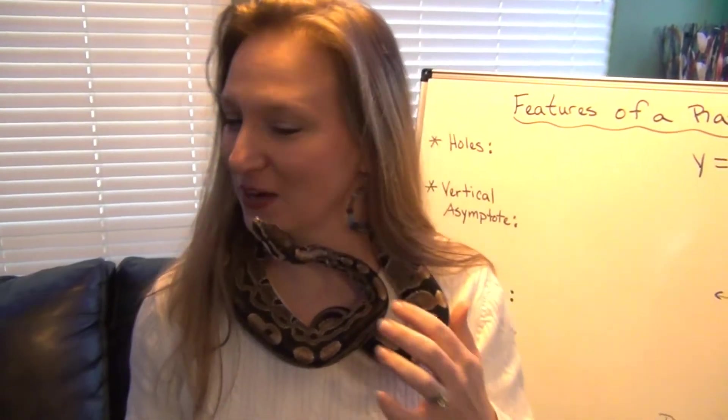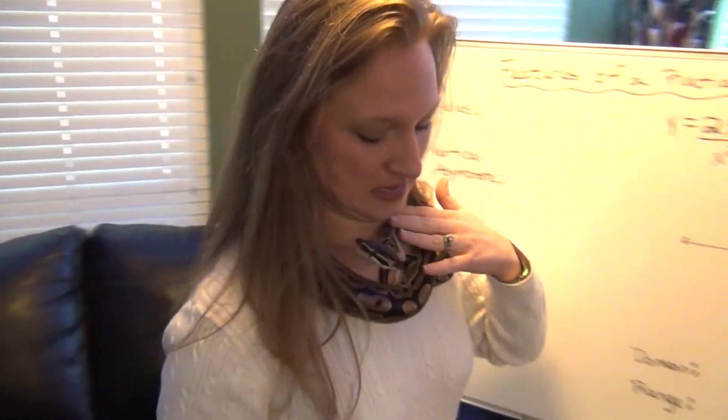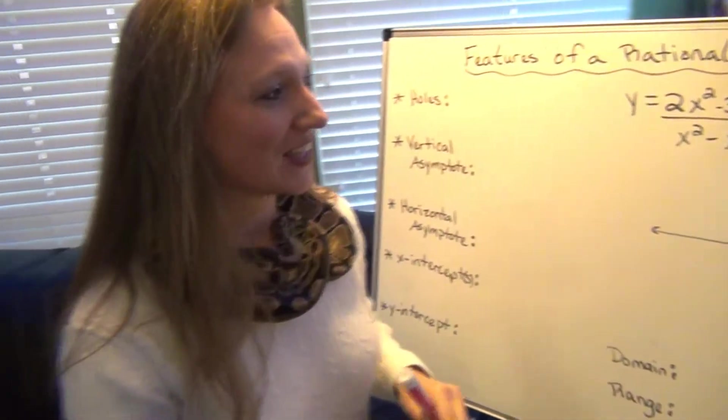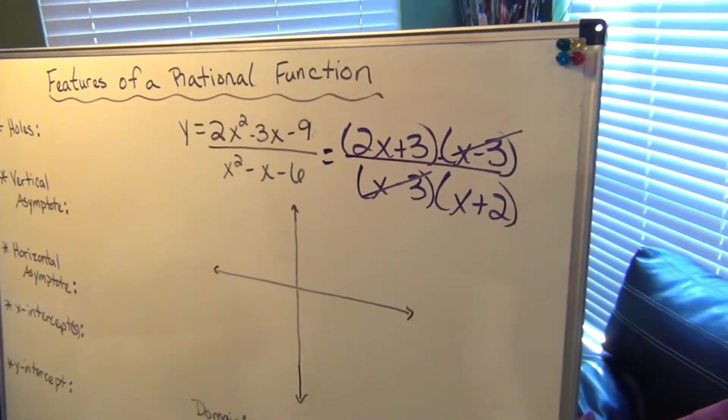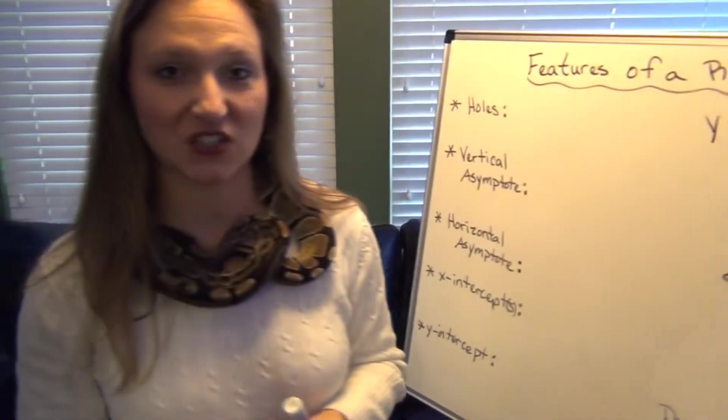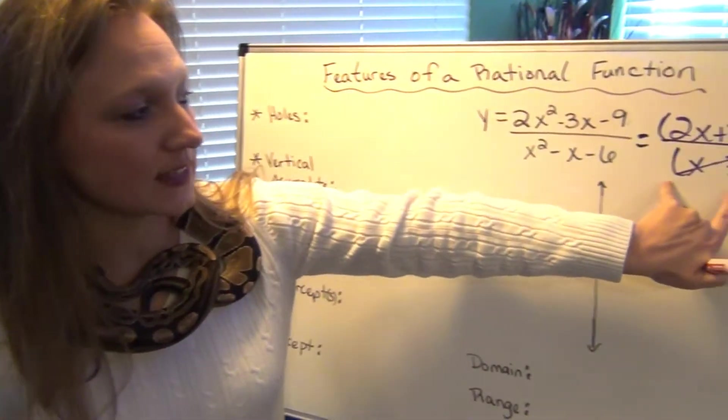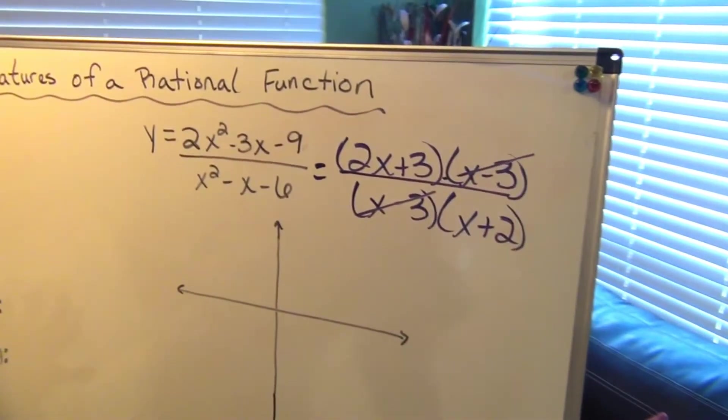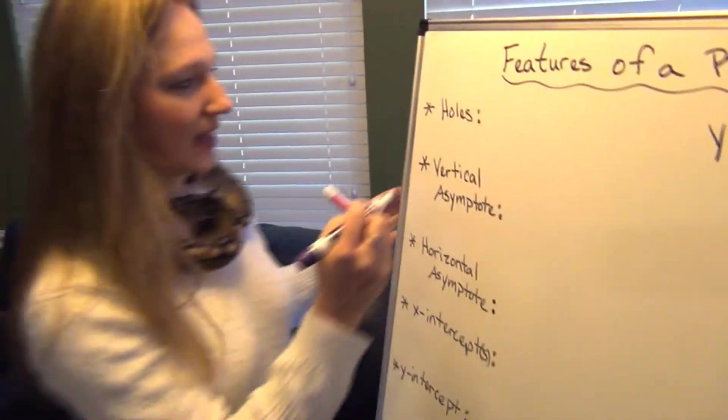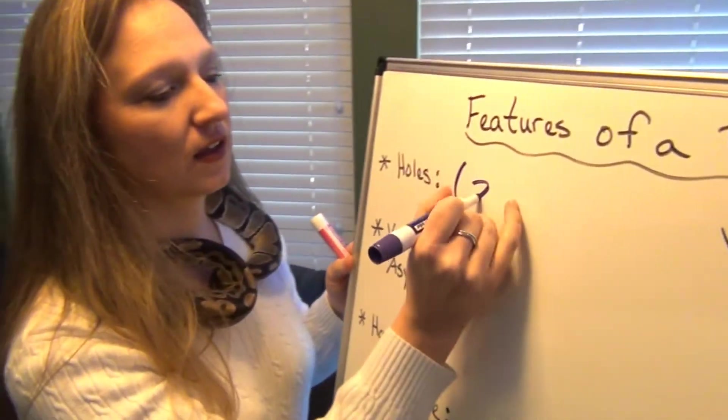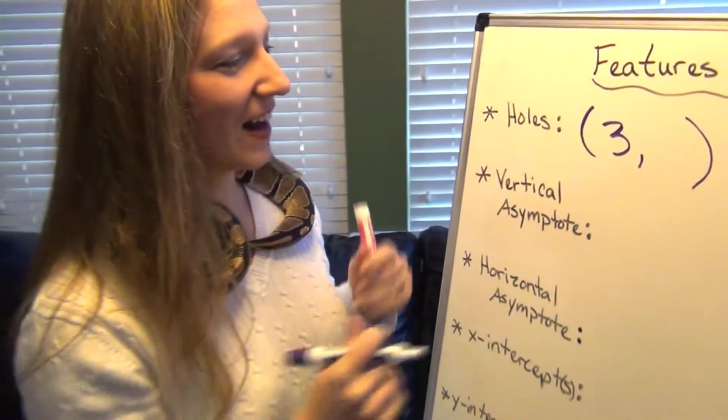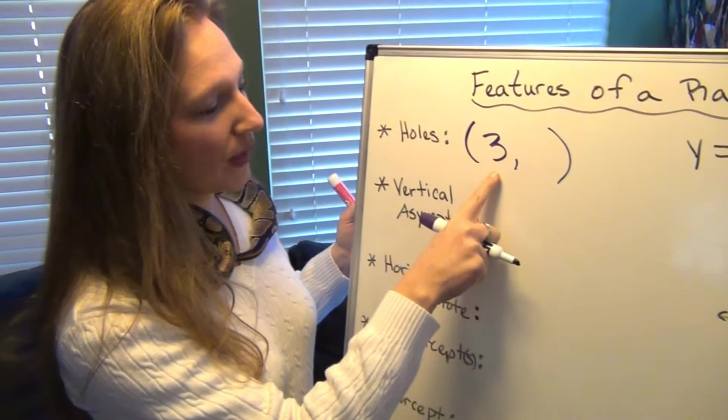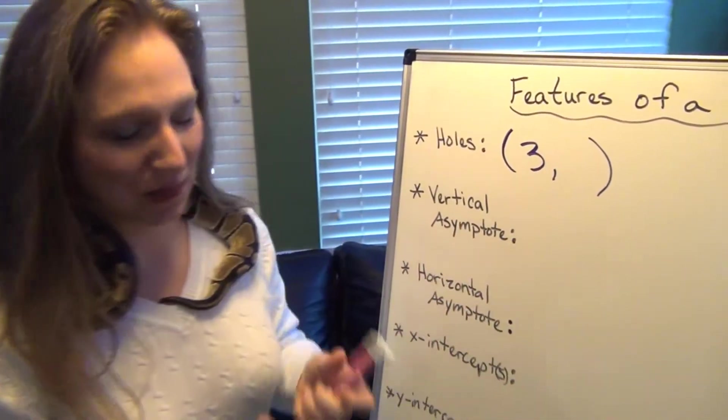What is Gordon doing? Gordon, that's a little bit too much. I know you love rational functions, but there you go, buddy. Okay, so we are going to cancel out the common factor x minus 3.